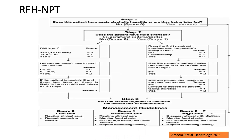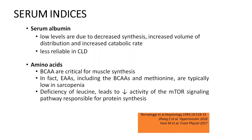The second important score is the Royal Free Hospital Nutritional Prioritizing Tool. It has different steps and gives different scores. The total score is calculated, and based on that score we determine whether the patient has low, moderate, or high risk of malnutrition.